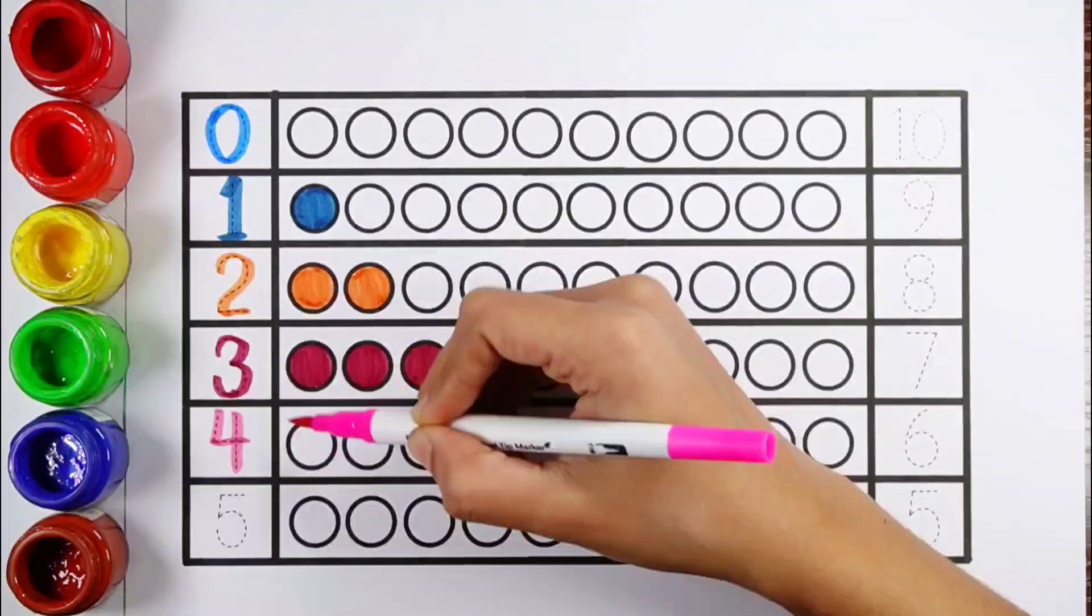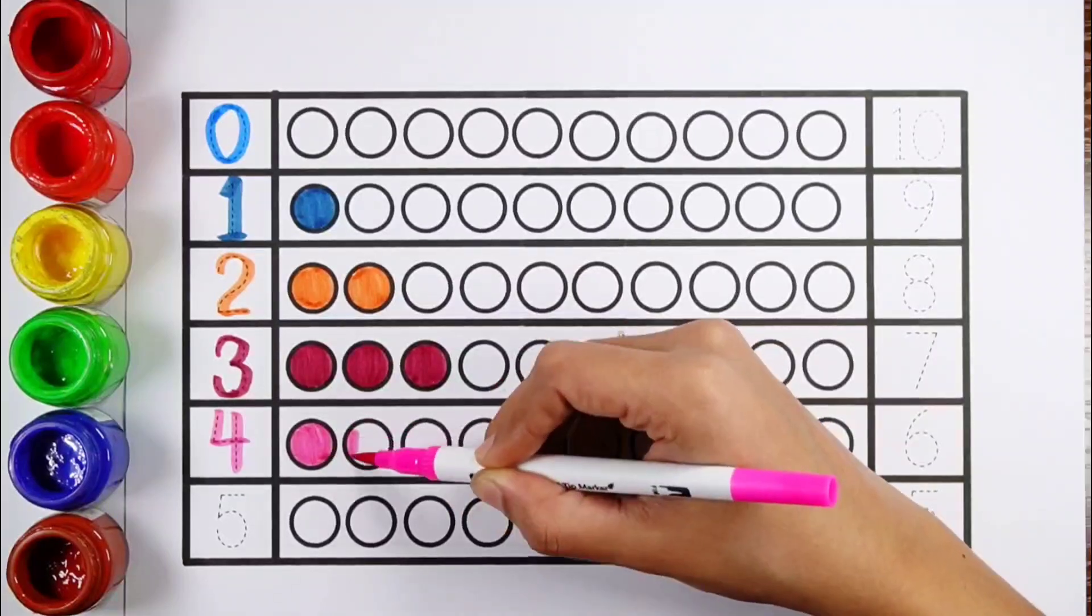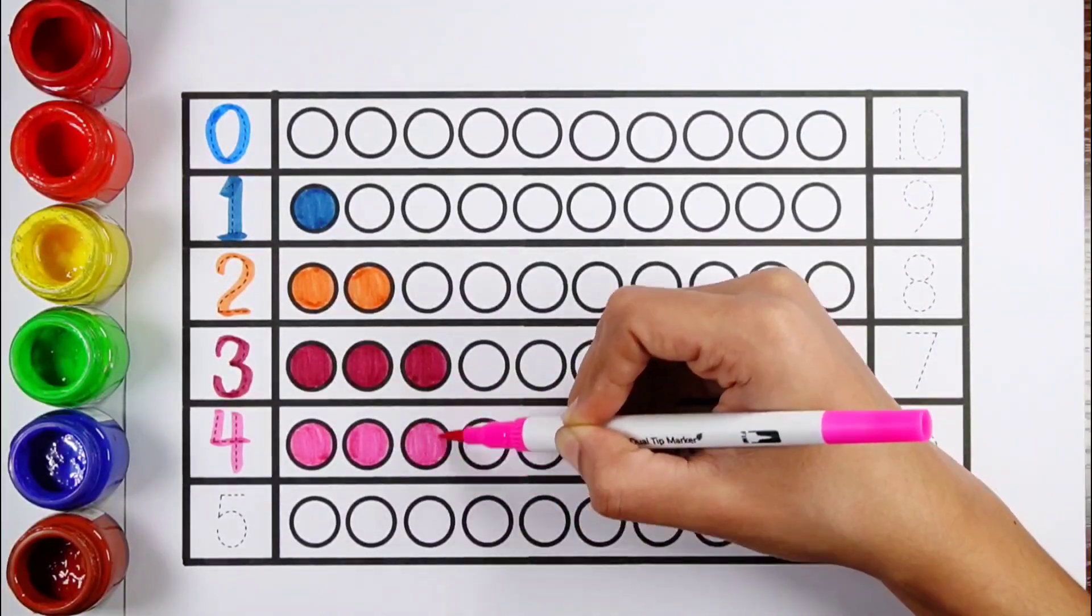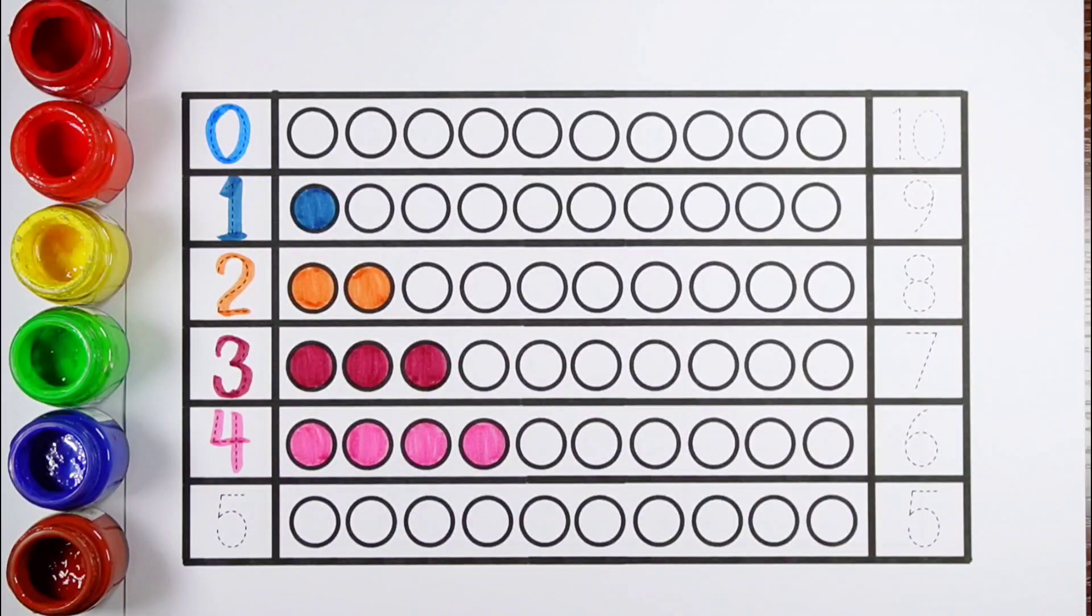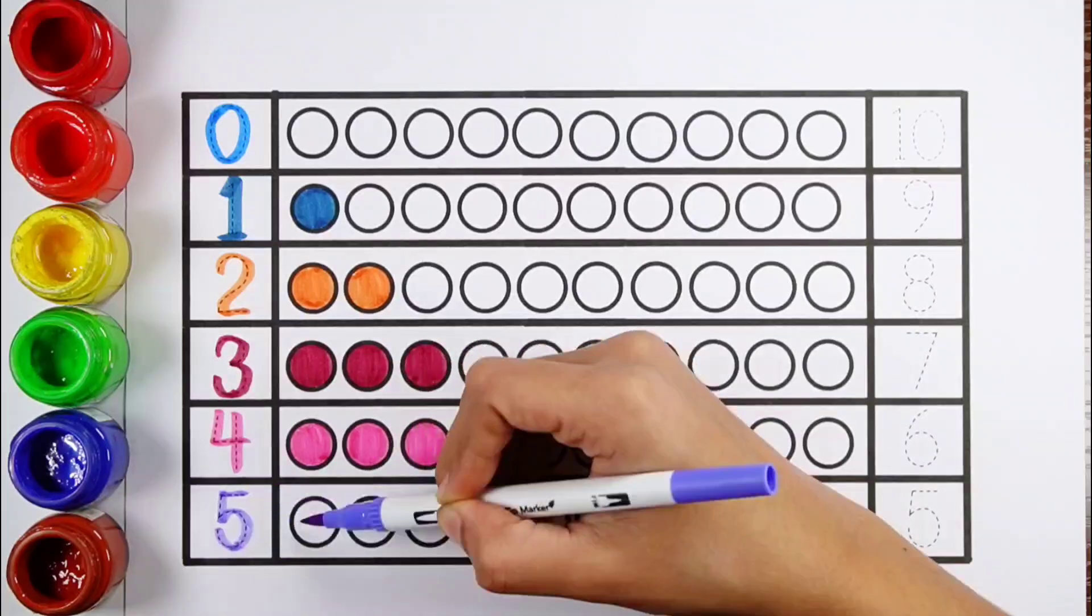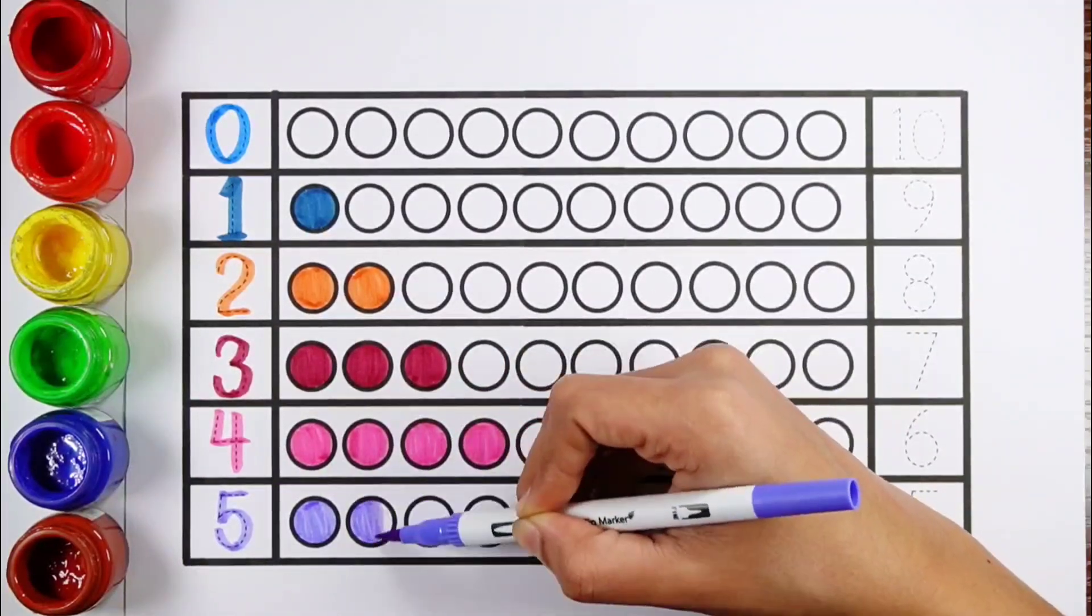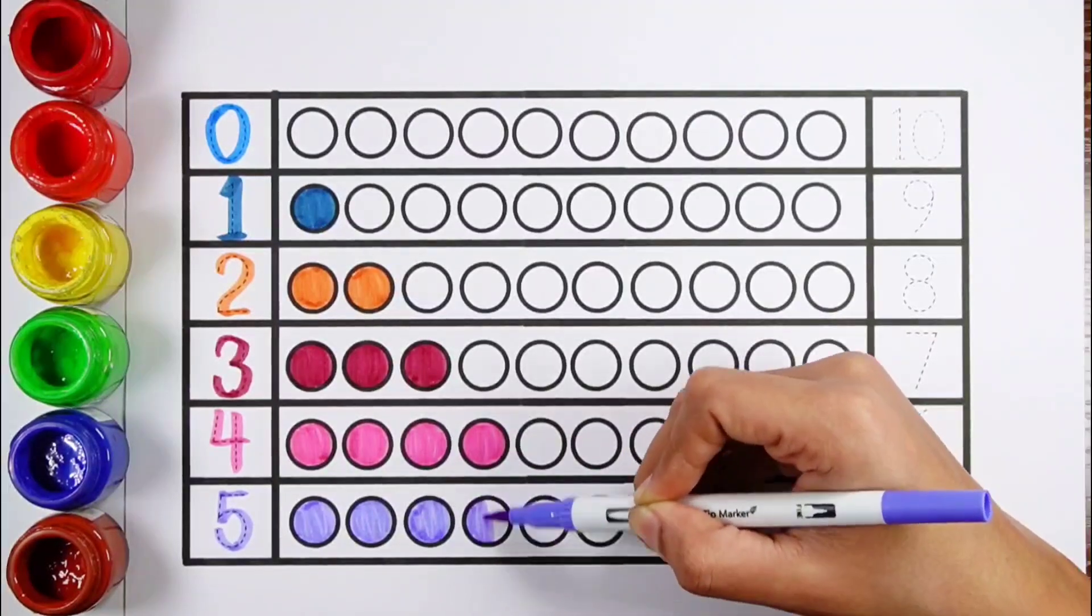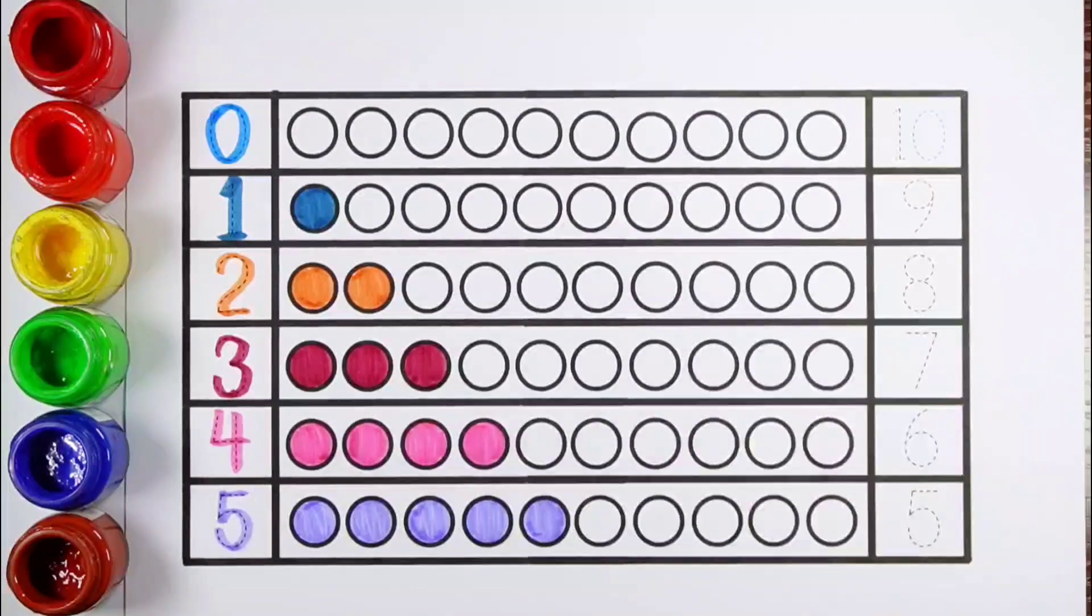Number 4. 1, 2, 3, 4. 4 balls. Number 5. 1, 2, 3, 4, 5. 5 balls.